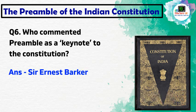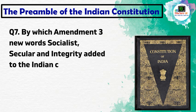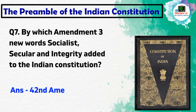Which amendment is known as the mini constitution of the Indian Constitution? The 42nd Amendment is known as the mini constitution. The words 'socialist', 'secular', and 'integrity' were added by the 42nd Amendment in 1976.